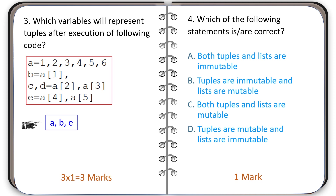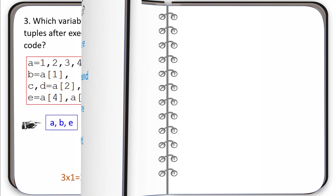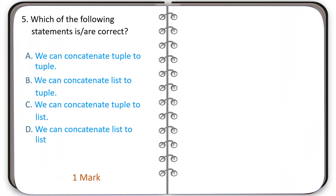The correct answer for question four is option B: tuples are immutable and lists are mutable. Question number five: identify which of the following statements are correct.